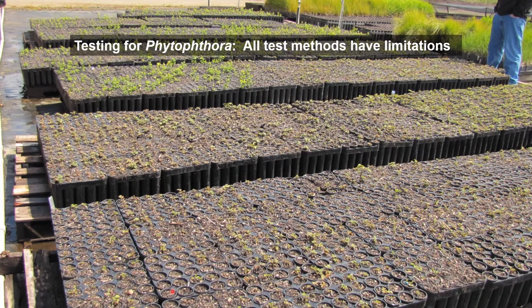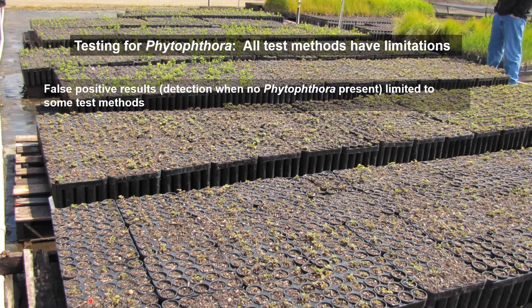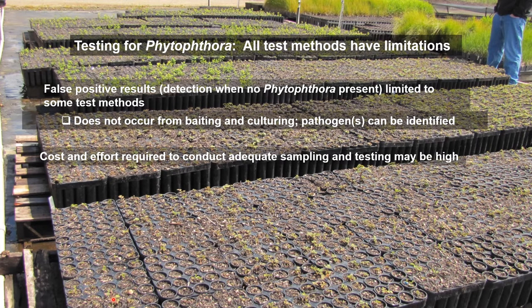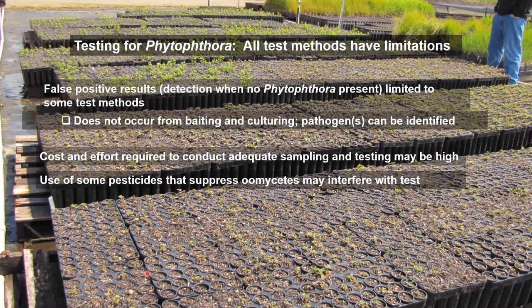Some tests can also produce false positive results. Things like ELISA tests and antibody-type tests can sometimes cross-react with other related organisms, so you can get a positive result when there's no Phytophthora present. But if we use methods like baiting and culturing where the pathogen is recovered and identifiable, we can't really have false positives because you can't identify it if it hasn't been there to begin with. The cost and effort to do adequate sampling and testing may be high. Also, some pesticides used in normal commercial nurseries that suppress Phytophthoras can interfere with some tests like those involving baiting or isolation.